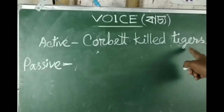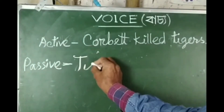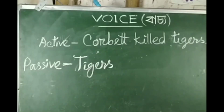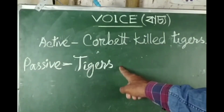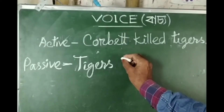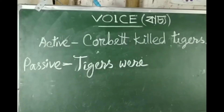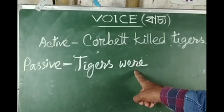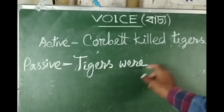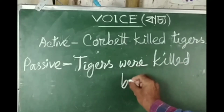Now if we use the plural form 'tigers', the passive voice changes accordingly. Since 'tigers' is plural and past tense, we use 'were'. 'Tigers were' is the plural subject form. So the passive sentence becomes: 'Tigers were killed by Corbett.'